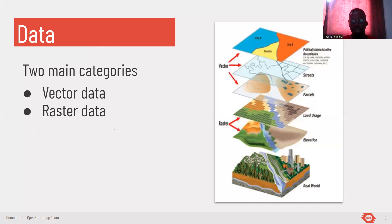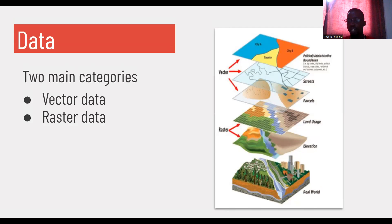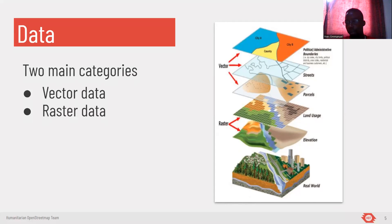Talking about data, we have two main categories: vector data and raster data. For example in OSM, the imagery you are uploading is basically raster data because it contains many pixels and each pixel contains information. The OSM data layer that you are uploading or mapping from the imagery are vector data.